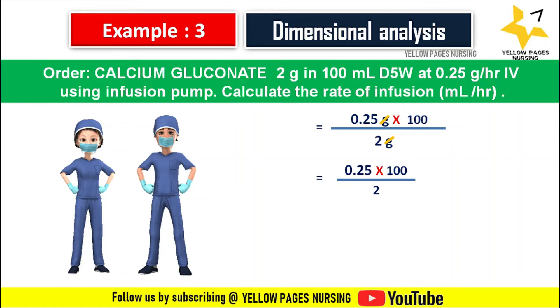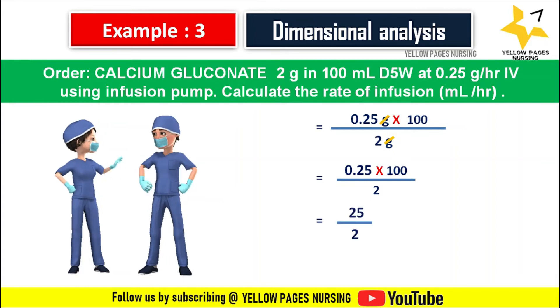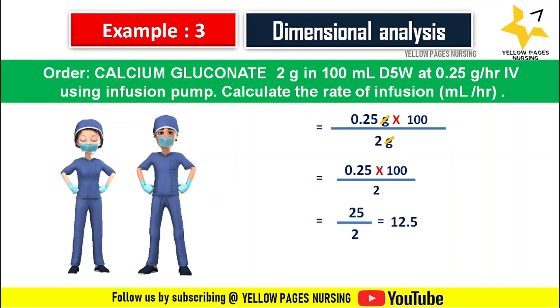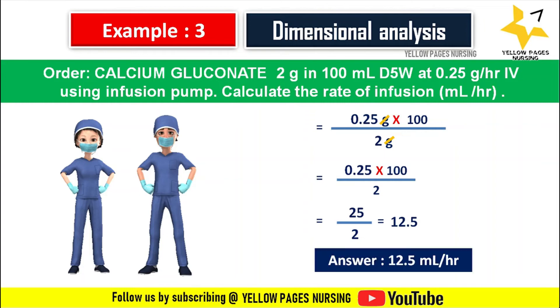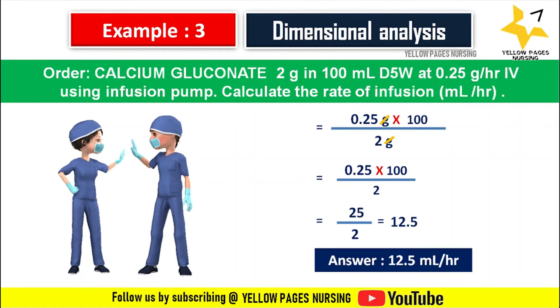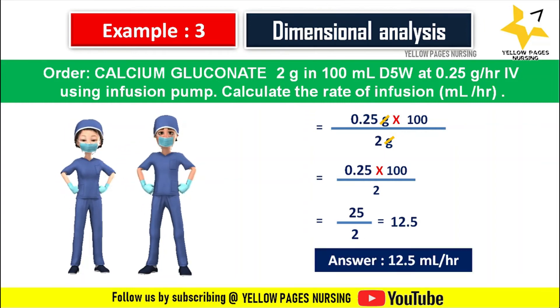This equals 0.25 multiplied by 100, divided by 2, which is 25 divided by 2, equal to 12.5. The answer is 12.5 ml per hour, and we set 12.5 ml per hour in the infusion pump.